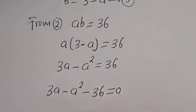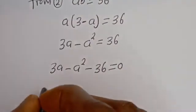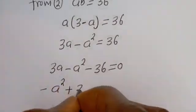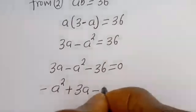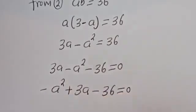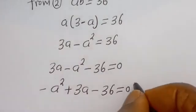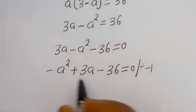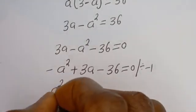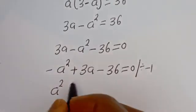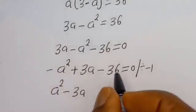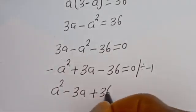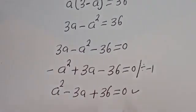We have 3a minus a squared minus 36 is equal to 0. Let's put this in standard form: minus a squared plus 3a minus 36 is equal to 0. Let's divide all through by minus 1. Then minus a squared divided by minus 1 gives a squared, plus 3a divided by minus 1 gives minus 3a, and minus 36 divided by minus 1 gives plus 36, is equal to 0. This is a quadratic equation.